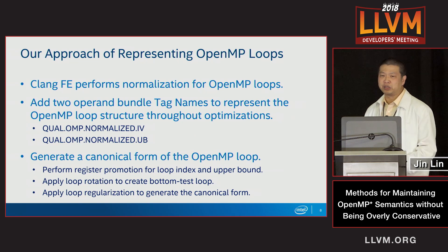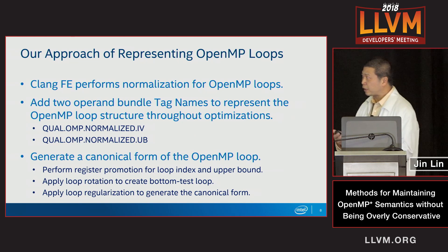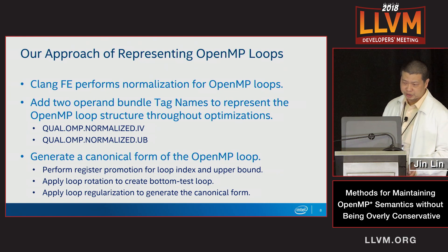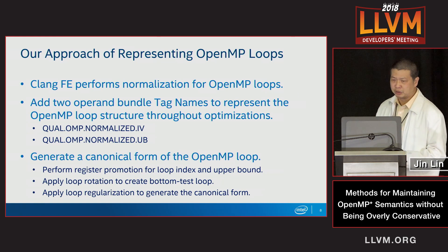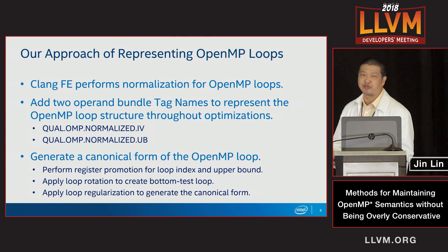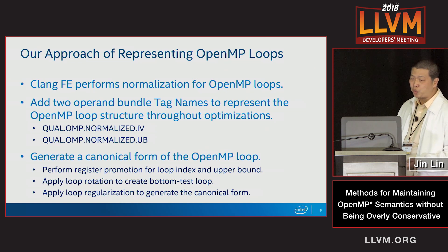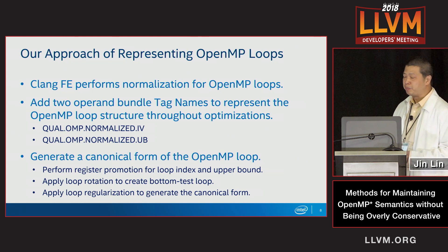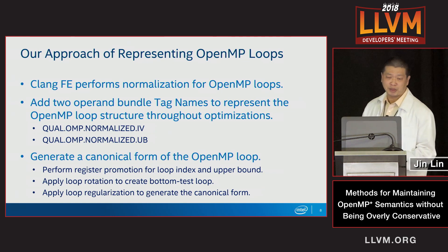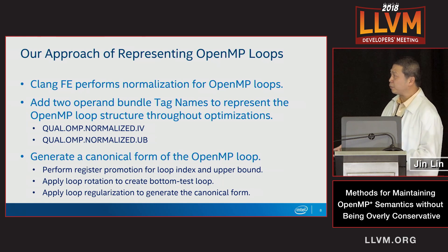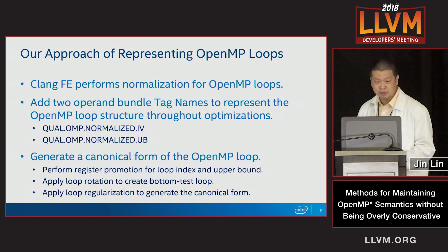Here's our approach to represent the OpenMP loops. First, we have clang to perform the loop normalization. In clang, we also add two operand bundle tag names to represent the loop index and the loop upper bound, so that the loop structure can be preserved throughout the optimizations. We use an OMP normalized IV and the OMP normalized upper bound. Then we can generate the correct form of the OpenMP loop before the OpenMP transformations. The compiler can perform register promotion for the loop index and the upper bound, apply loop rotation to create a bottom-test loop, and finally use loop canonicalization to generate the canonical form.